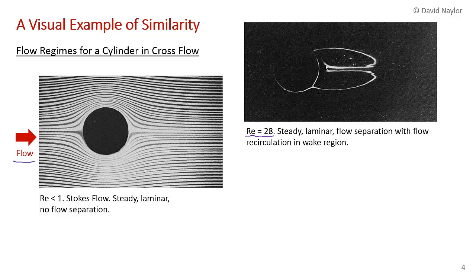At higher Reynolds number we get flow separation, and this is the separation point. Flow departs the cylinder, and inside this recirculation zone, flow is drawn in the opposite direction toward the separation point. The wall shear stress is zero at a separation point.